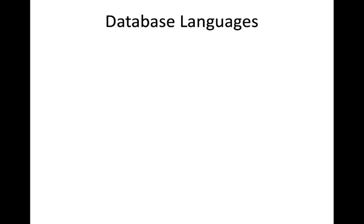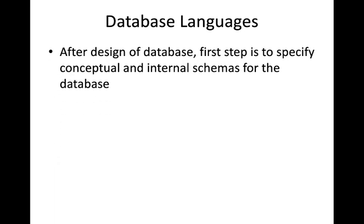First we will see about DBMS languages. After the design of a database is completed, the first step is to specify the conceptual and internal schemas. We have already seen the conceptual and internal schema in the three-schema architecture, along with the external schema. Data independence means that the external schema can be changed without changing the conceptual schema and internal schema, and similarly we can change the internal schema without affecting others — we need to change only the mappings between them.